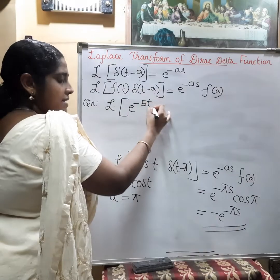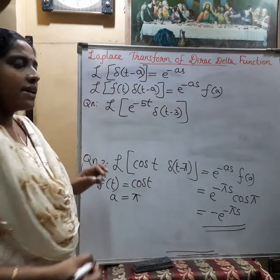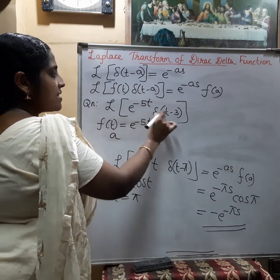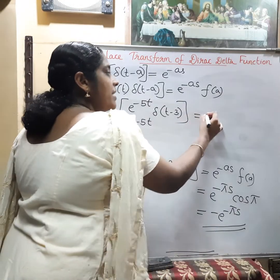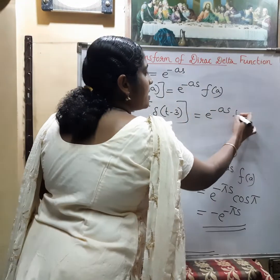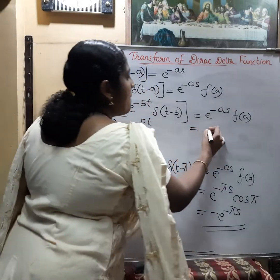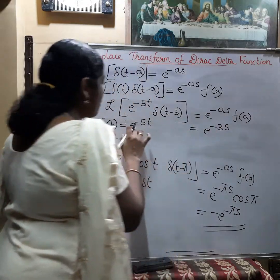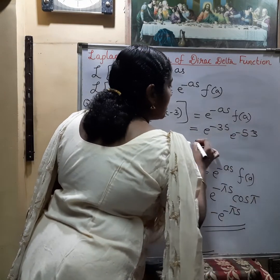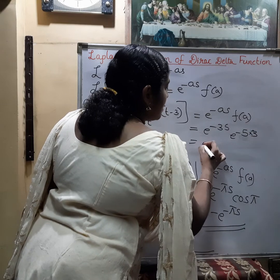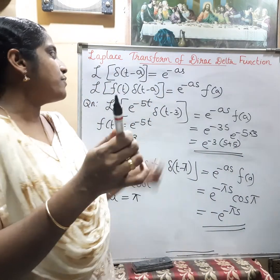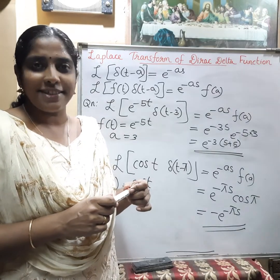Question 3: Find the Laplace transform of e^(−πt)·δ(t−3). Here, f(t) = e^(−πt) and a = 3. Using the formula, the Laplace transform of f(t)·δ(t−a) = e^(−as)·f(a). So the answer is e^(−3s)·f(3) = e^(−3s)·e^(−πt) evaluated at t=3, giving e^(−3s)·e^(−3π), which equals e^(−(3s+3π)).